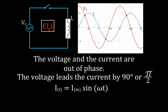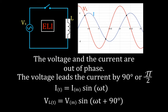We can calculate the current at any given time using this equation: the current at time T is equal to the maximum current times the sine of omega T, omega being the angular velocity of the source times time. We can also calculate the voltage across the inductor at time T as equal to the maximum voltage times the sine of omega T plus 90 degrees, because the voltage leads the current by 90 degrees. For a pure inductive circuit with only a source and an inductor — no resistors, no capacitors — the voltage leads the current by 90 degrees and they are out of phase.